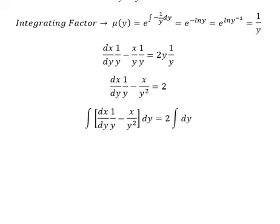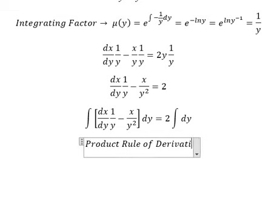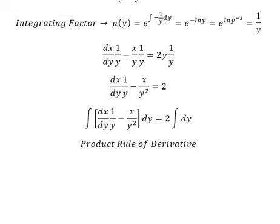Now we apply the product rule of derivative. You get the first derivative of u multiplied by v plus first derivative of v multiplied by u.